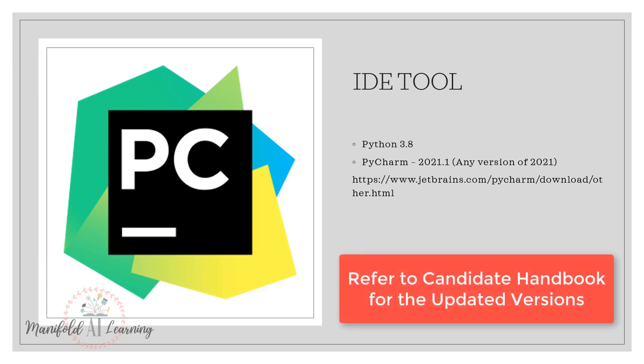To download PyCharm, just use the URL present in the file on this particular slide. The PyCharm version is 2021.1 or any version of 2021, and the Python version is 3.8.